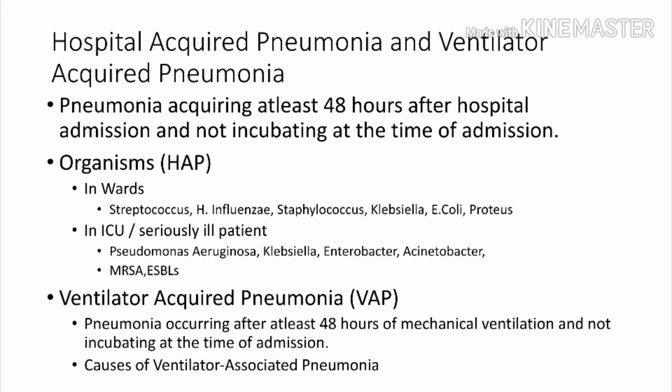Hospital acquired pneumonia is defined as pneumonia developing at least 48 hours after hospital admission and not incubating at the time of admission. In hospital acquired pneumonia, suspect Streptococcus, H. influenzae, Staphylococcus, Klebsiella, E. coli, and Proteus. In ICU, suspect more serious infections like Pseudomonas, Klebsiella, Enterobacter, Acinetobacter, MRSA, or ESBL bacteria.